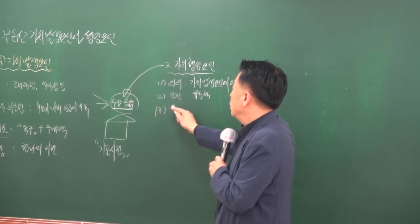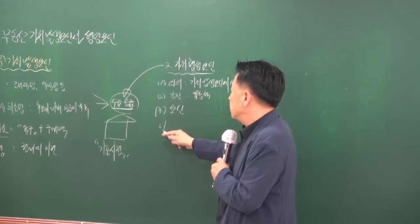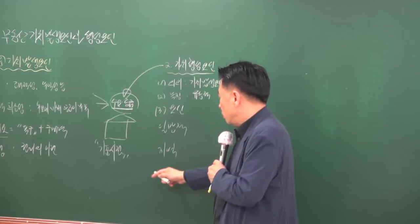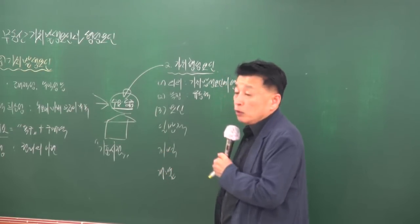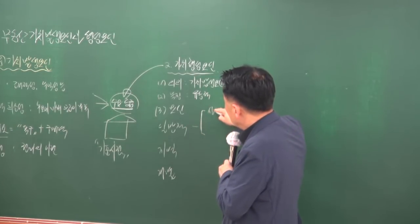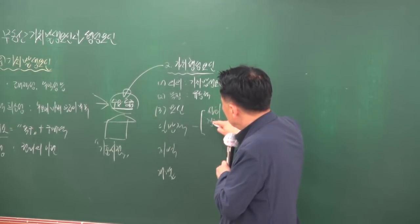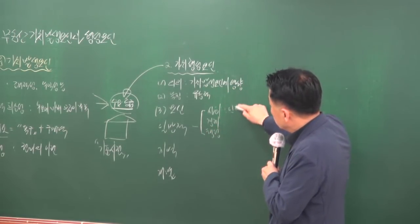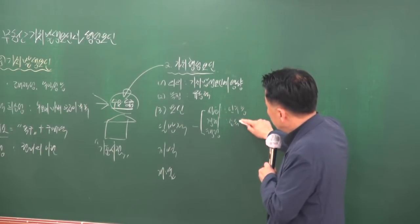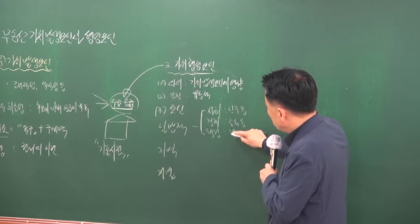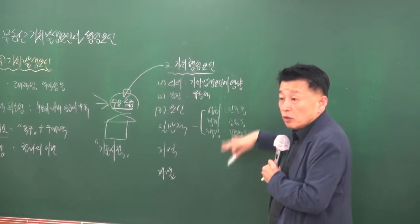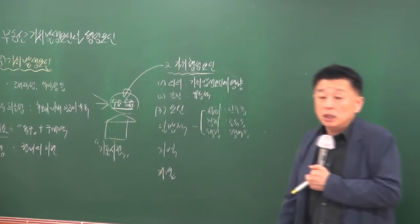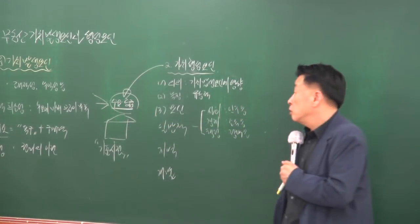가치형성요인에는 일반적 요인, 지역 요인, 개별 요인이 있습니다. 일반적 요인에는 사회적·경제적·행정적 요건이 포함됩니다. 사회적 요인에는 인구, 경제 요인에는 소득, 행정 요인에는 정책 등이 있으며 이들은 계속 변합니다. 이것이 변하면 지역의 수요 공급에 영향을 주고 시세의 변화를 유도합니다.